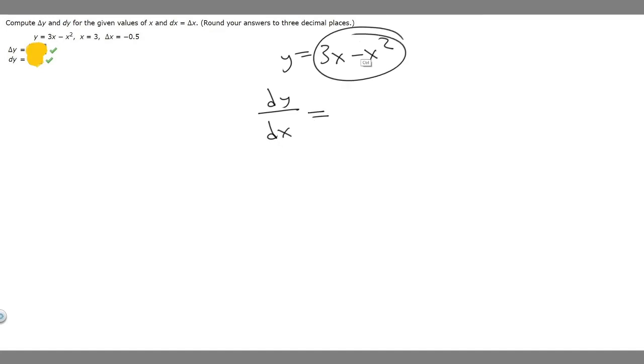This side is going to become the derivative of 3x minus x squared. So the derivative of 3x is just 3, derivative of minus x squared is minus 2x. So it's going to become 3 minus 2x.